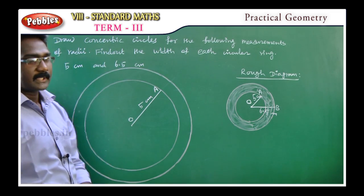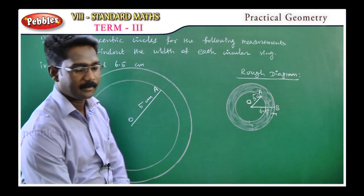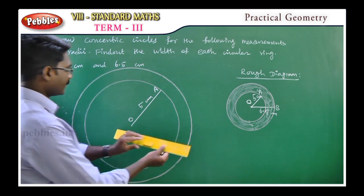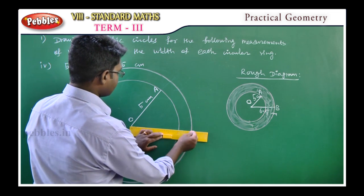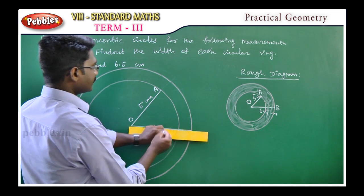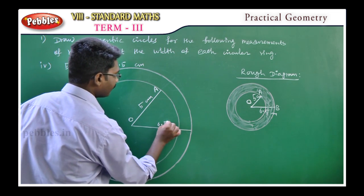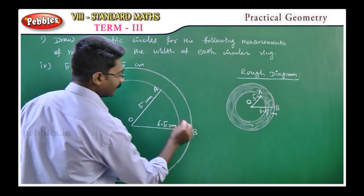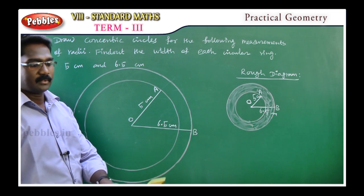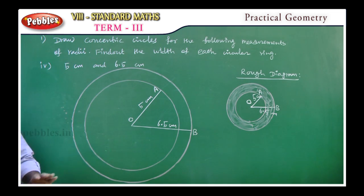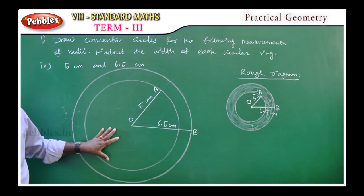The circle is 6.5cm. This is the radius — 6.5cm. This is the point B. So now we have a concentric circle construction. First is the rough diagram, second is the main diagram.